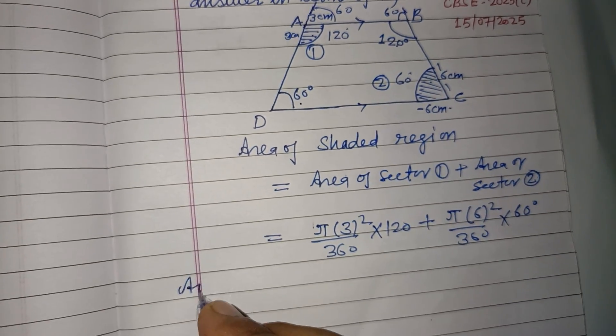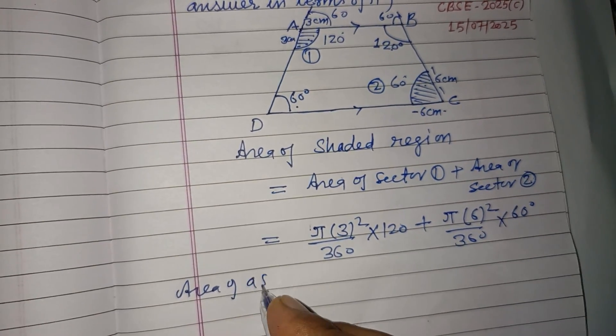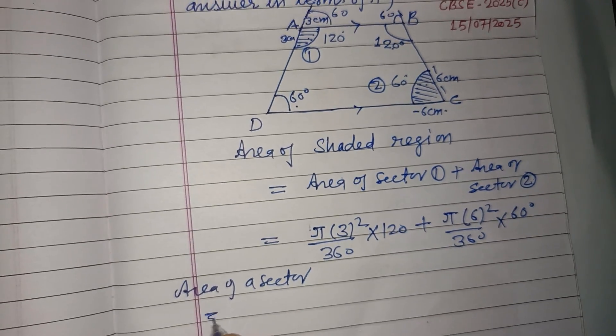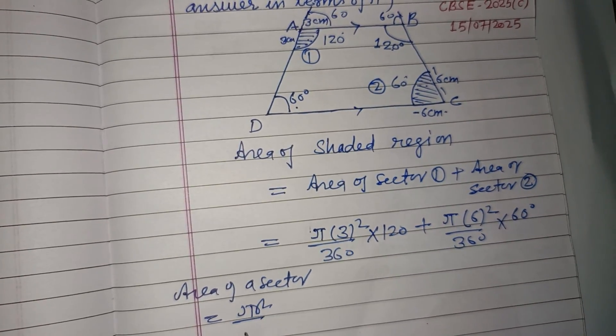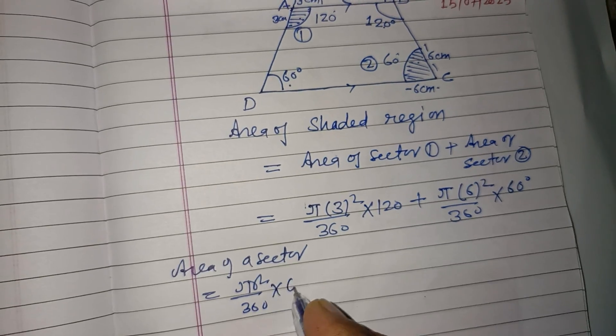So, you know that area of a sector is πr²/360 times θ.